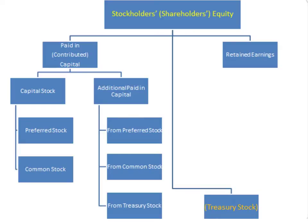We will start with the equity section itself. It has two main parts to it. The first one is paid in or contributed capital — that's the amount that was received from the shareholders. They paid in into the company or they contributed that capital, and it may not have been necessarily in cash. It could have been services or assets that they brought in to start the corporation.